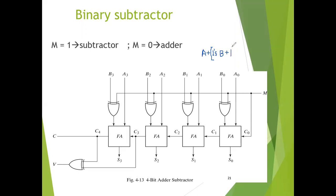First of all we will take the 1's complement of B, the number which we have to subtract from A, and then we will add 1 to that 1's complement, and that will become the 2's complement of that digital number. Then we will add that number to A, and the operation thus performed becomes A plus the 1's complement of B plus 1, which is equal to A plus the 2's complement of B. For unsigned binary numbers, that gives the value of A minus B.